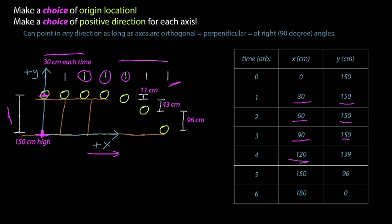So now it starts to fall. Well, on the x-axis, it's still another 30 centimeters further, so it's at a positive 120 centimeters, but it has fallen 11 centimeters, so its y position is 11 centimeters less than what it was before. It falls 43 centimeters from that, so that's 150, 96. And then finally, it falls 96 centimeters, and so it's at 0 on the y-axis, but still another 30 centimeters further, for a total of 180 centimeters to the right of the origin.